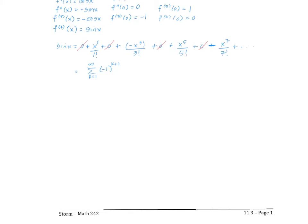Starting with k equal to one, I want the first term positive, so I'll use negative one to the k plus one. For the exponent, the powers go 1, 3, 5, 7 — odd powers — so I write it as two k minus one. Since the exponent and the factorial match, I write negative one to the k plus one times x to the two k minus one over two k minus one factorial. Let's verify this gives x over 1 factorial minus x cubed over 3 factorial plus x to the fifth over 5 factorial, and it does.